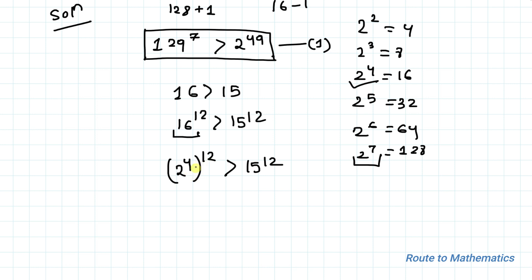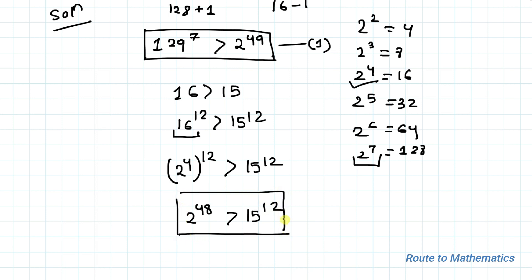Applying the same exponential rule, we multiply the exponents: 4 × 12 = 48, giving us 2^48 is greater than 15^12. Let's take this as Inequality 2.